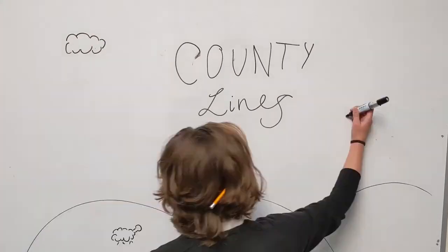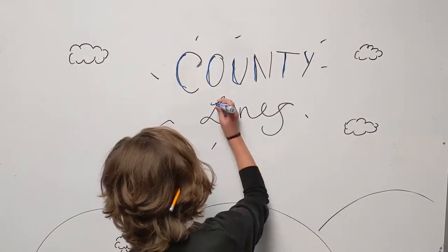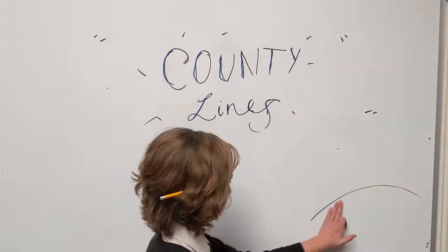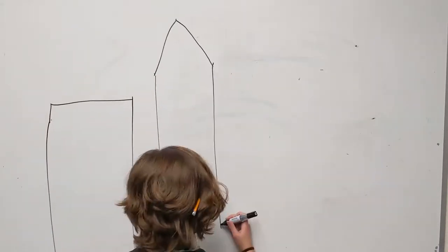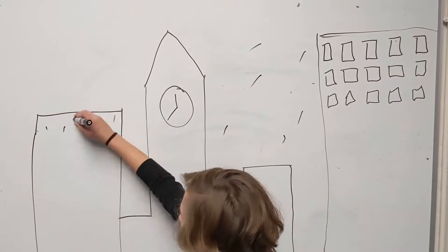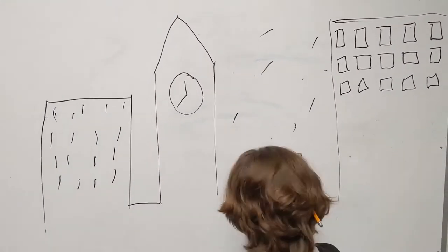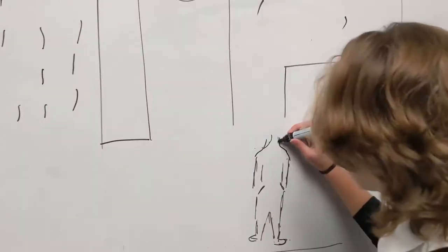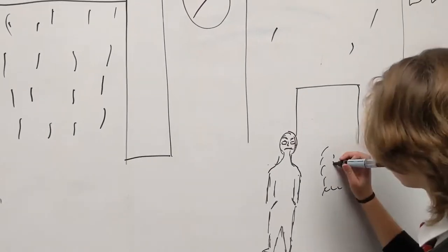Today we will be talking about County Lines. Normal characteristics of someone who is involved with the County Lines are becoming distant or aggressive. They could also be getting new clothes or shoes they usually couldn't afford.